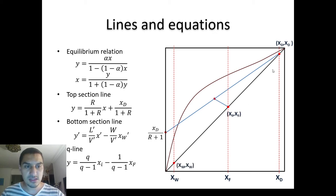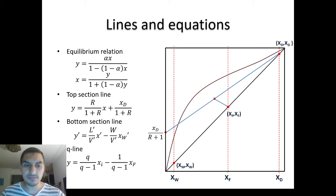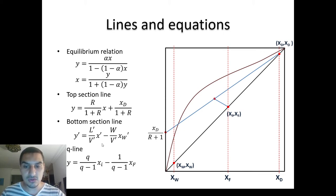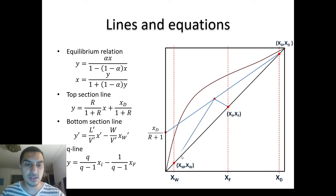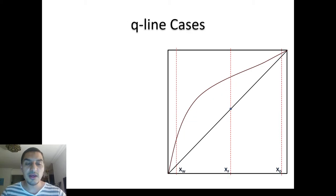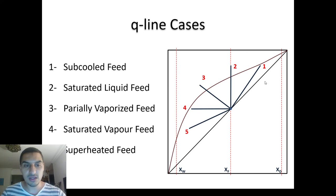The Q-line is the locus of the intersection of the top and bottom operating lines. Q is a variable that depends on the phase of the feed — superheated, subcooled, saturated liquid, saturated vapor, etc. We cannot draw the bottom section line directly because we don't know certain flow terms, so we find the intersection of the Q-line and the top section line to get one point on the bottom line, then use X_w to draw it.